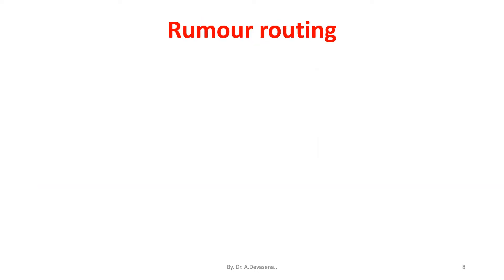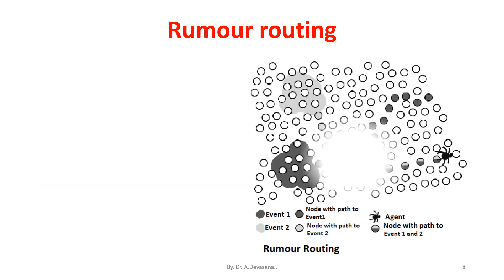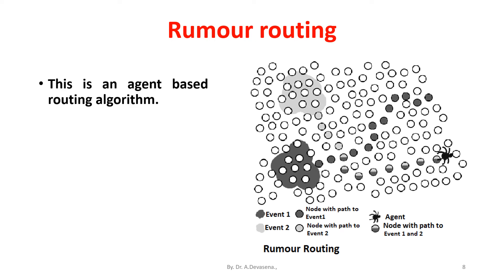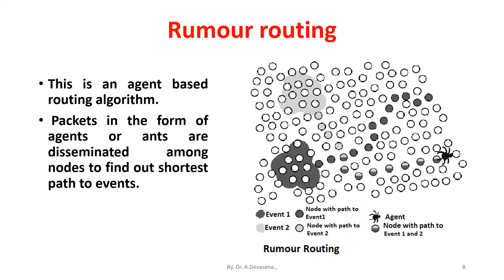Rumor routing is an agent-based routing algorithm. Packets in the form of agents or ANTs are disseminated among nodes to find out shortest paths to events. Agents can also perform path optimization.